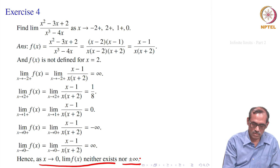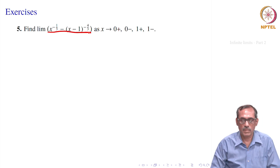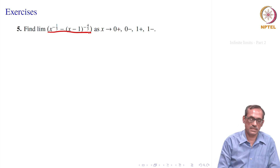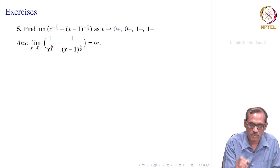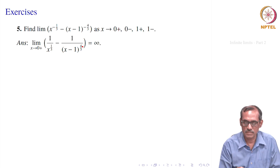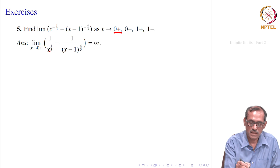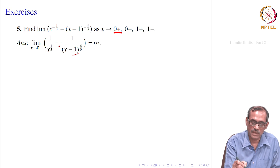One more problem: find the limit of x^(-1/3) - (x-1)^(-4/3) as x → 0+, 0-, 1+, and 1-. Rewriting: 1/x^(1/3) - 1/(x-1)^(4/3). As x → 0+, x is positive and near 0, so 1/x^(1/3) → +∞. The term (x-1)^(4/3) is near (-1)^(4/3) ≈ 1, so it stays bounded. Therefore the limit is +∞.